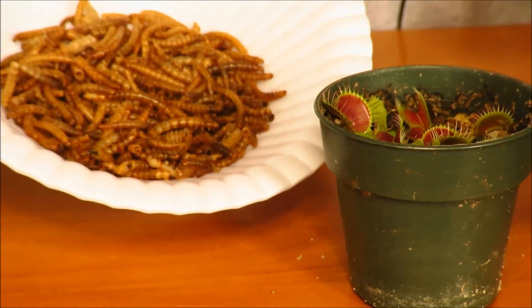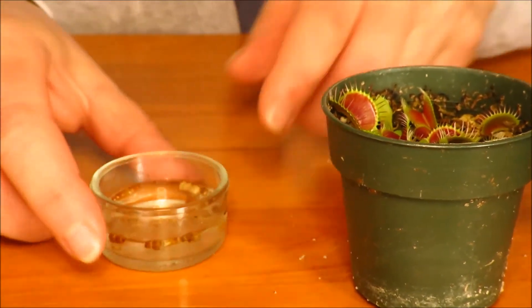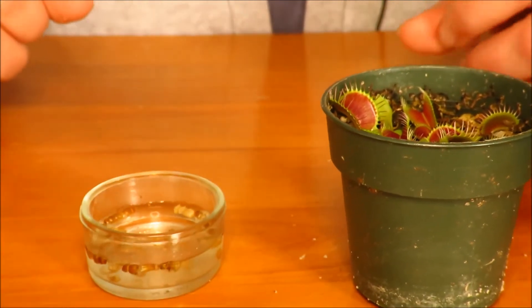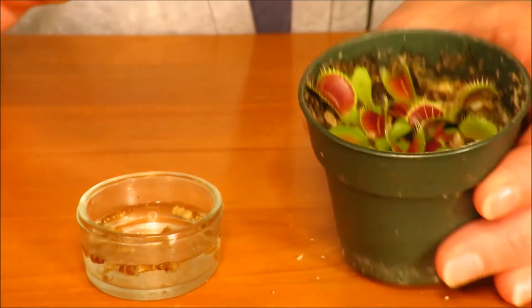And we've got our food, those mealworms. And as I said, I've got a couple of them already soaking in water here. You want to cut them up a little bit. You don't want anything larger than a third of the size of a trap.